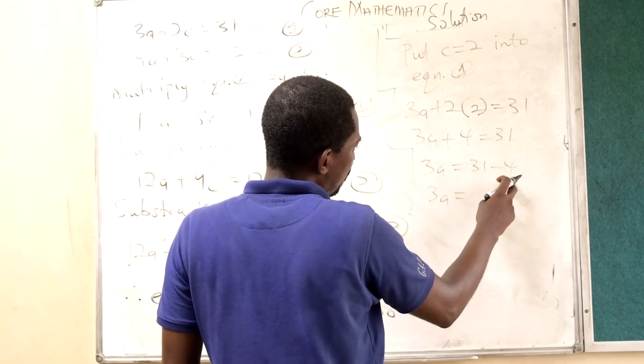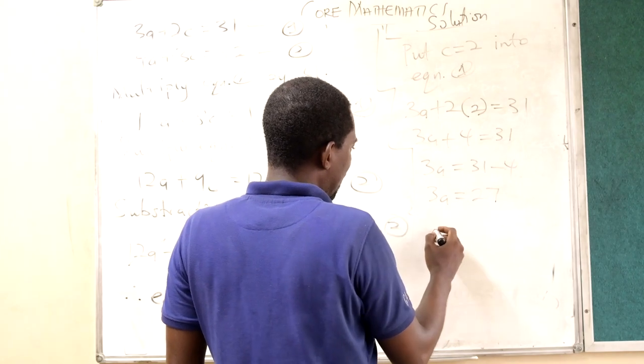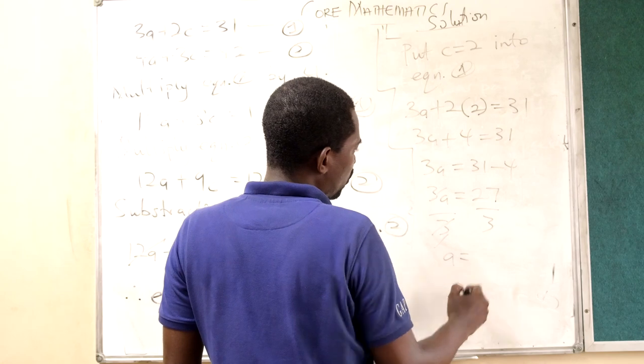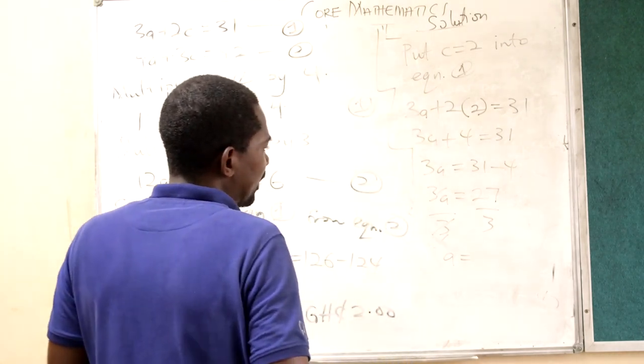3A is equal to 27. And now A is equal to 27 by 3, A is equal to 9.